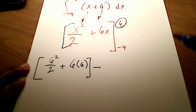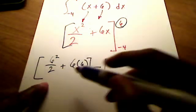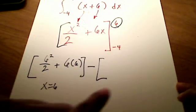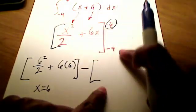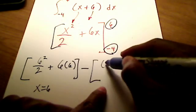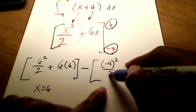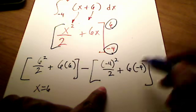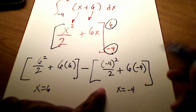And from that, we're going to subtract the exact same thing. So again, I just plugged everywhere I see an x, I plugged in a 6. I'm going to do the exact same thing everywhere I see an x, but this time I'm going to plug in the lower limit here, which is a negative 4. So I've got (-4)²/2 plus 6 times (-4). And again, I plugged in a negative 4 everywhere I saw an x.